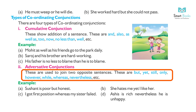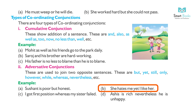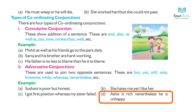2. Adversative conjunctions — these are used to join two opposite sentences. These are: but, yet, still, only, however, while, whereas, nevertheless, etc. Example: (a) Shant is poor but honest. (b) She hates me yet I like her. (c) I got first position whereas my sister failed. (d) Ashish is rich nevertheless he is unhappy.